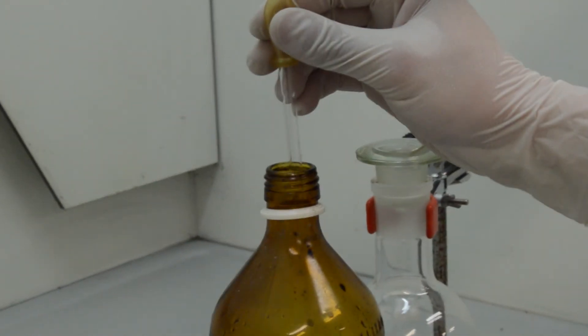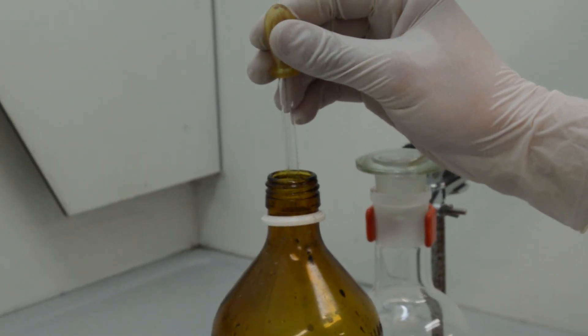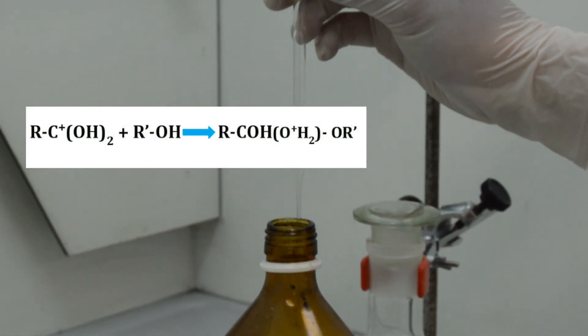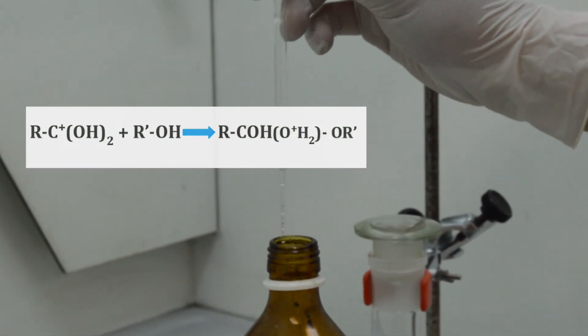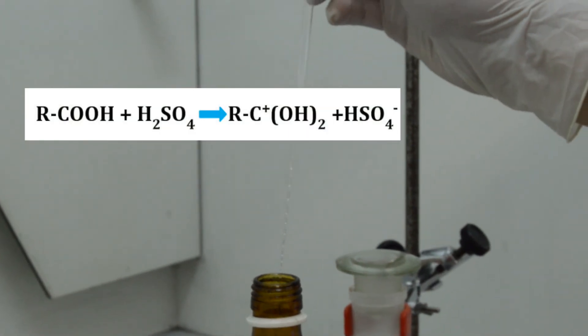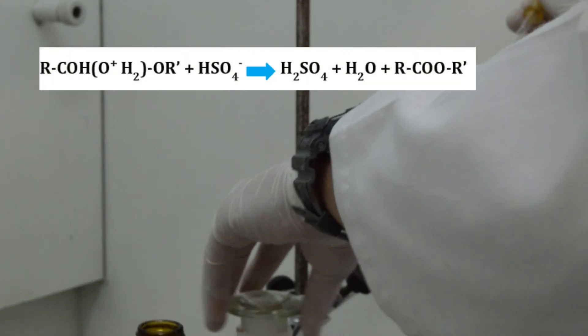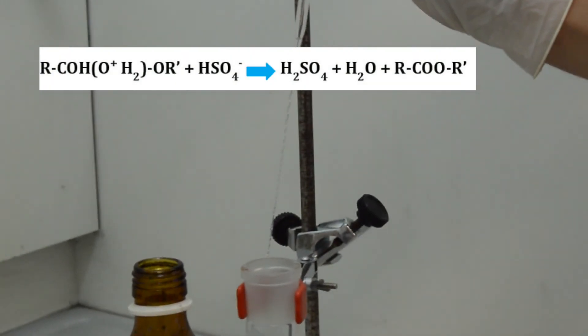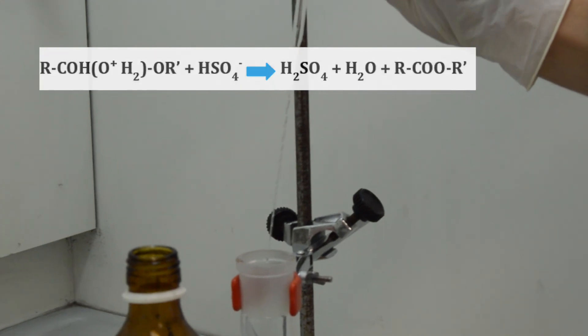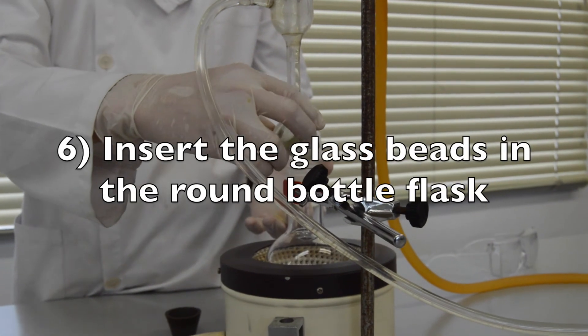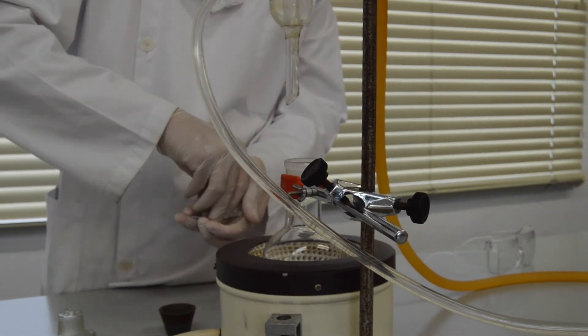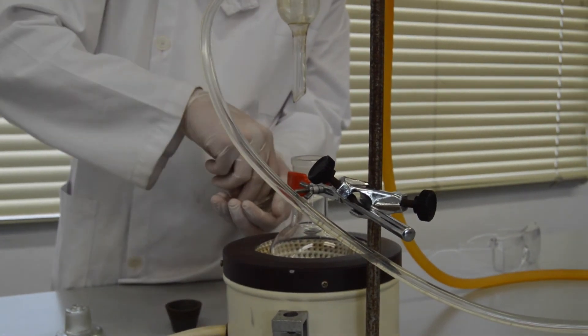The sulfuric acid, being a proton donor stronger than the carboxylic acid, will react as catalyst, giving away one proton. The alcohol molecule is attracted by the protonated carboxylic acid and forms a complex. This complex is unstable and, in order to become more stable, will release the water molecule and the proton.